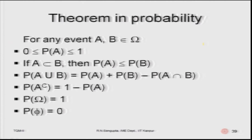Theorems in probability: for any events A and B in the universal set, the probability of any event is always between 0 and 1. If A is a subset of B, then P(A) ≤ P(B). The probability of the union of A and B equals P(A) + P(B) − P(A∩B). The probability of the complement of A is 1 − P(A). The probability of the null set is 0, and the probability of the universal set is 1.